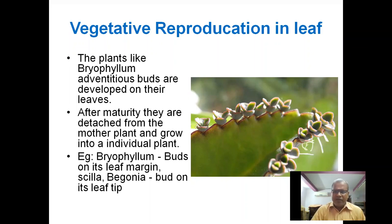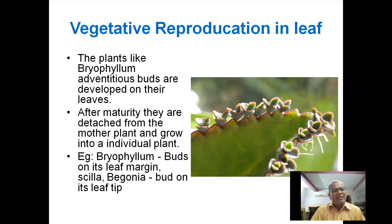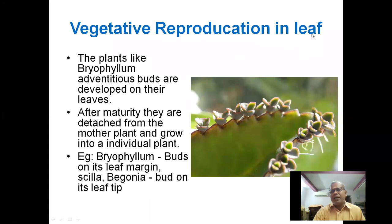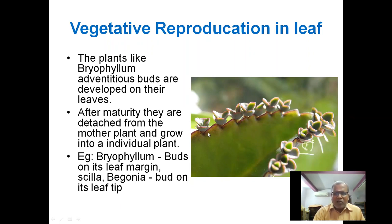I would like to give a brief idea regarding vegetative reproduction in plants through the leaf. Reproduction takes place through the leaf. In this example, in the Bryophyllum, the leaf margins are where new growth originates. These buds are known as the epiphyllous buds.